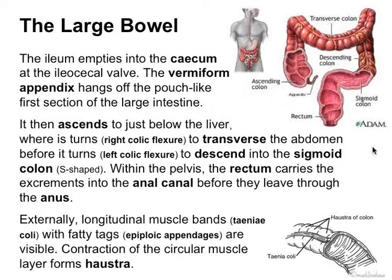The large intestine ascends — it goes upward just to about the liver, which is on the right side in the right upper quadrant. It goes up to that area and makes a turn called the right colic flexure. It then makes a turn and goes across right underneath the ribcage — that's the transverse colon. There it makes another turn called the left colic flexure, and it goes down and descends into an S-shaped portion at the end — the sigmoid colon — which is within the pelvis. Then it goes straight down again and that's called the rectum, which feeds into the anal canal before it leaves through the anus.